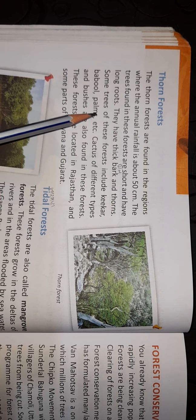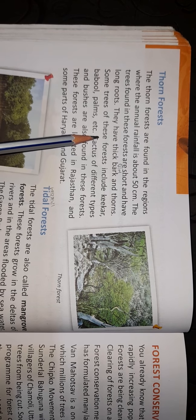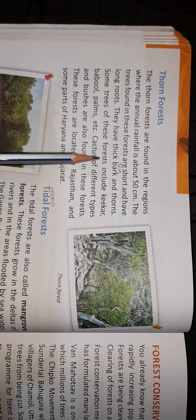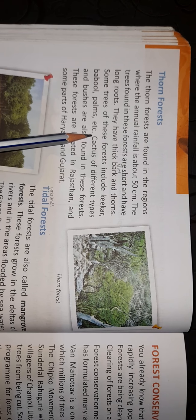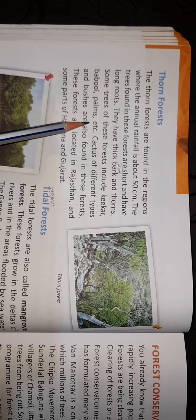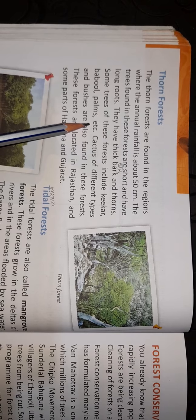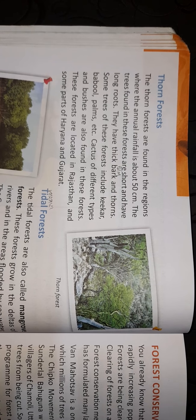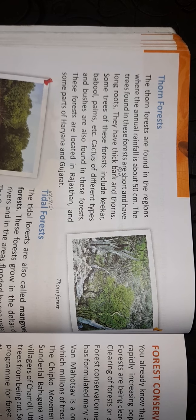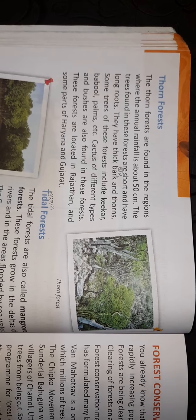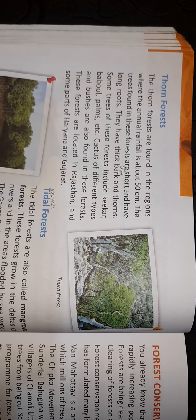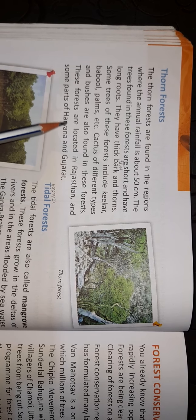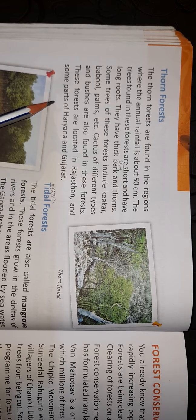Thorn forest trees have thick bark and thorns. Some trees include kikkar, babool, palm, etc. Cactus and different types of bushes are also found in this forest. Cactus leaves are thick because they store water inside them, as water is scarce in these areas. Thorn forests are located in Rajasthan, and some parts of Haryana and Gujarat where water availability is low.